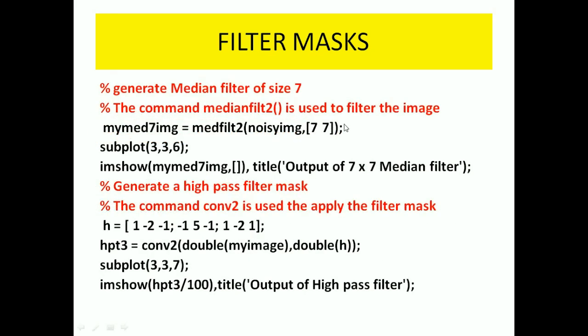And here we are applying a median filter of size 7x7 to the same noisy image, so that we get some better results at the output. The output title is 'output of 7x7 median filter', and the image shown is the my_median_filter 7x7 mask for all values.